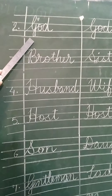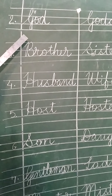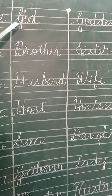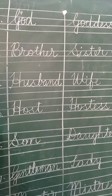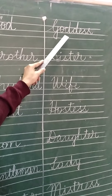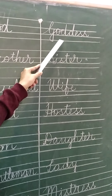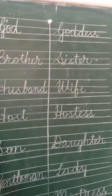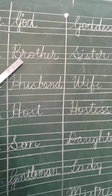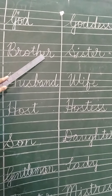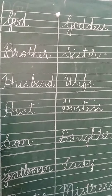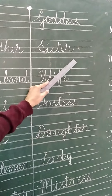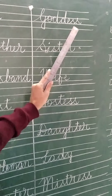Students, you know very well — God, like Ganesha, Brahma, Vishnu, Mahesh. And Goddess — Durga ji, Parvati ji. Then brother — B-R-O-T-H-E-R. Brother is a boy. S-I-S-T-E-R — sister. Sister is a girl.